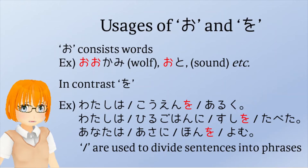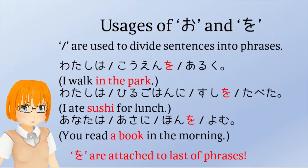In contrast, the other o is contained only in sentences. I extracted these sentences from the previous page, then writing slashes in each sentence to divide into phrase by phrase. By dividing into phrases, it is somewhat easier to understand. The letters o painted in red are shown only at the end of phrases. In other words, special o is attached to the end of phrases.